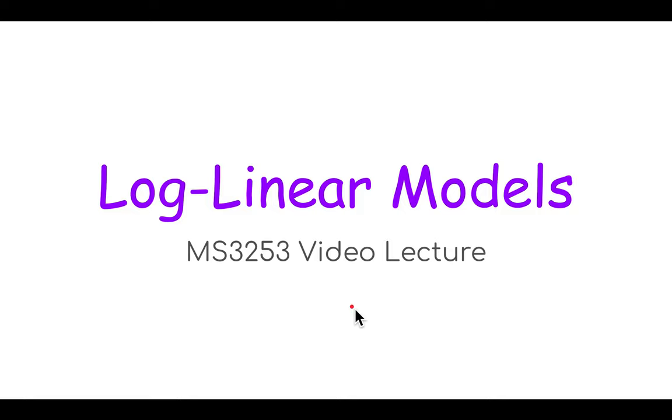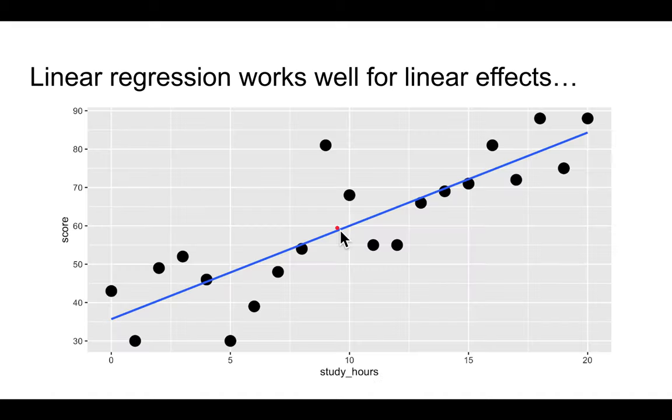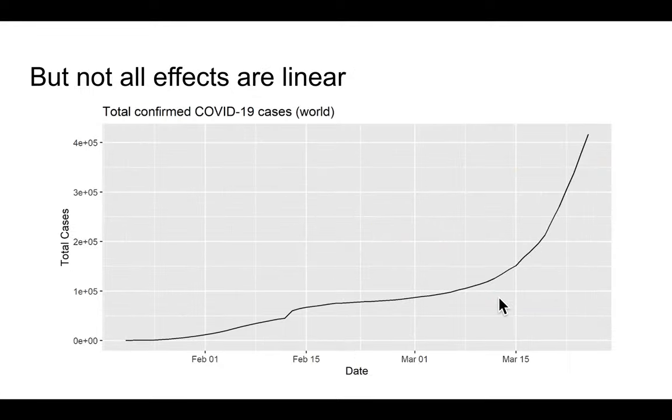Hi, this is Zach. In this video lecture, I'll be talking about log linear models. So we know that regression, linear regression, works very well when the explanatory variable has a linear effect on the response variable. However, not all explanatory variables have linear effects on the response variables.